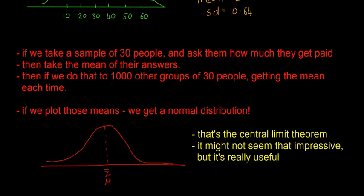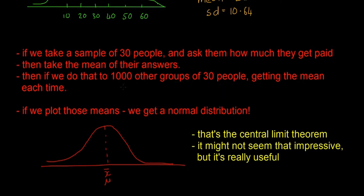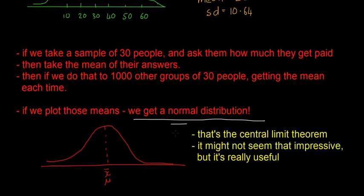Then we do this another 1000 times. We ask 1000 groups of 30 people and get the mean of their incomes every single time. After we do that, if we plot all of those means — some numbers are going to be 20, some 25, some 30 because the different samples have different people — if we plot all of them, we're going to get a normal distribution.